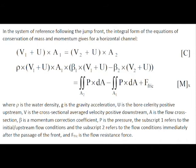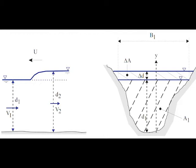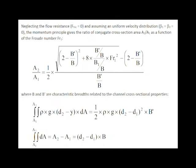In the system of reference following the jump front, the integral form of the equation of conservation of mass and of momentum can be derived for a horizontal channel. Using the following notations and neglecting flow resistance, the momentum principle gives a relationship between the ratio of the conjugate cross-section area A2 over A1, as a function of the Froude number, in which B and B' are characteristic widths related to the channel cross-sectional properties.